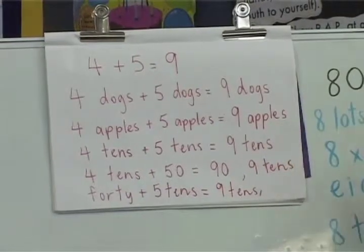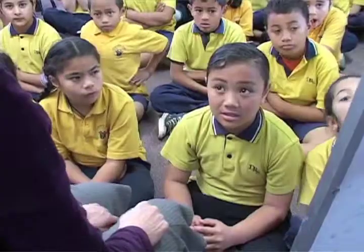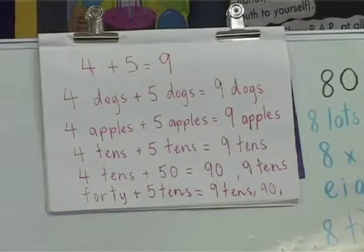Is there another way I could write that answer? 90. I could write 90. Would there be one more way I could write the answer? Yes. The word ninety? I could write the word ninety. I'll have to write it sideways.